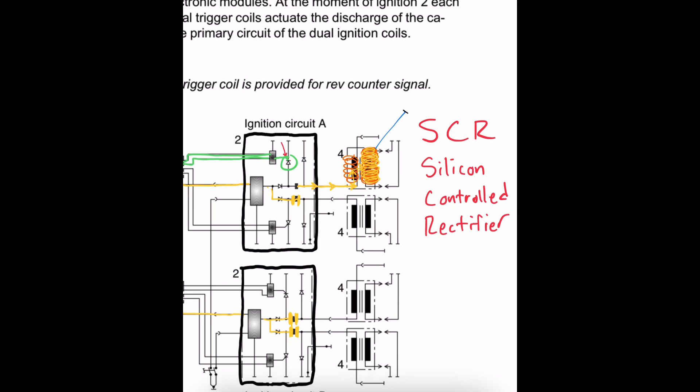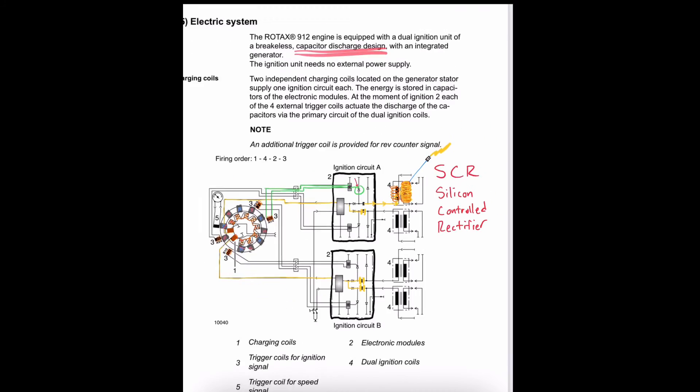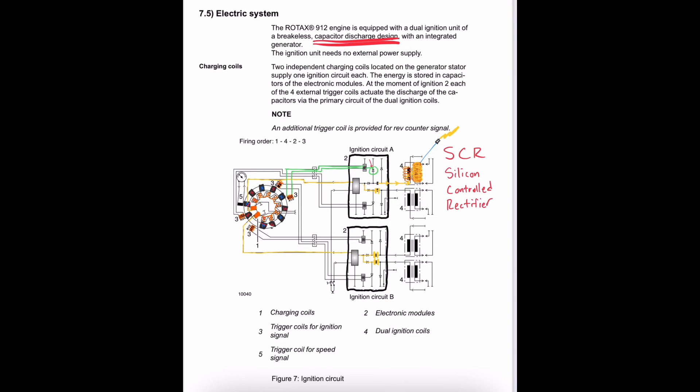What we really want to take away from this is that our ignition system operates very similar to a magneto, but it does not fit the definition of a magneto. And the main operating principle is the use of a capacitor inside the electronic module, which will store up electricity and release or discharge electrical energy in the form of a direct current.